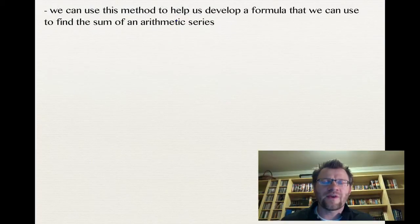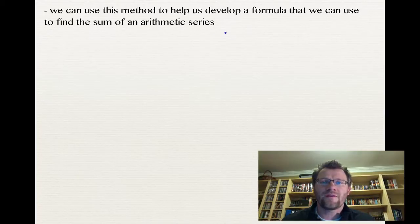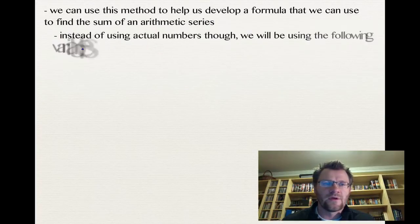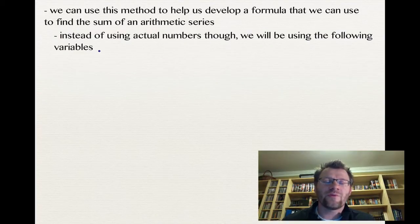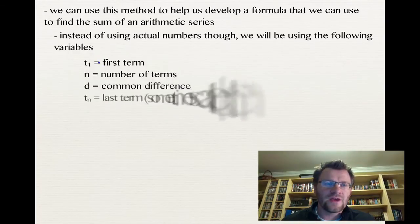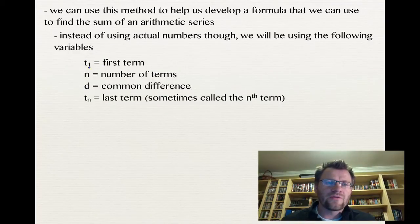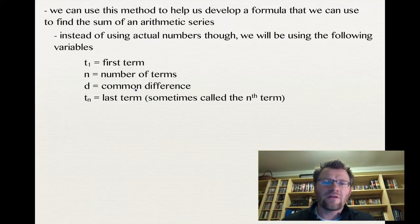We're going to use this Gaussian method to help us develop a formula to find the sum of an arithmetic series. Instead of using actual numbers, we'll use variables: T1 as our first term, N as our number of terms, D as our common difference, and TN as our last term — the Nth term, which we talked about yesterday.